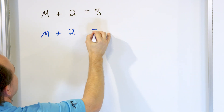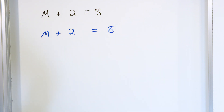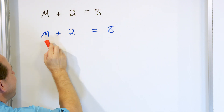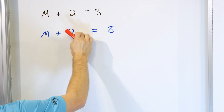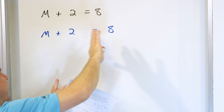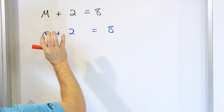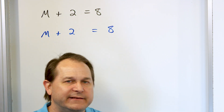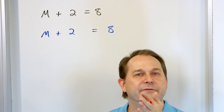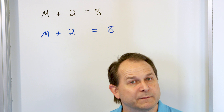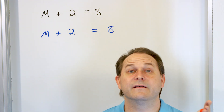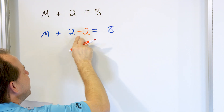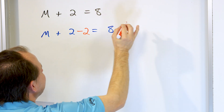Going back to this, how do we solve for M? Let me rewrite the equation: M plus 2 equals 8. I have M — that's what I want to solve for — and I have a plus 2, I'm adding 2 to it. How do I get rid of this 2 and move it away from the M? I want to get M by itself on one side of the equal sign. Since I'm adding 2 here, I want to do the opposite. The opposite of addition is subtraction, and the opposite of subtraction is addition.